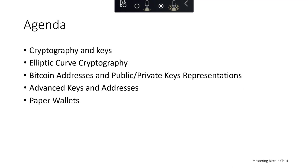We'll take a look at the particular asymmetric cryptography algorithm that Bitcoin uses, which is elliptic curve cryptography. Then we'll talk about Bitcoin addresses and the relationship between addresses and the public and private keys. Finally, we'll dive into some advanced key and address topics, and we'll take a look at paper wallets.